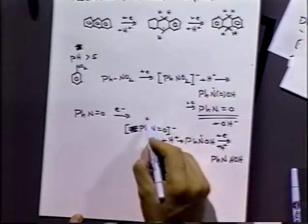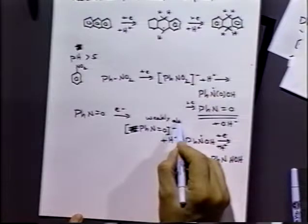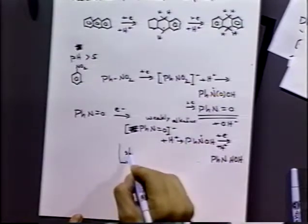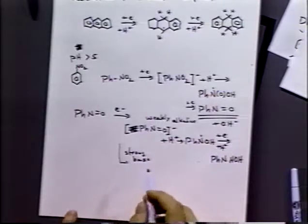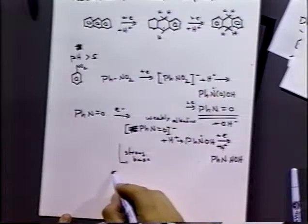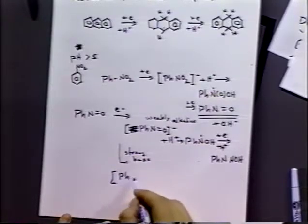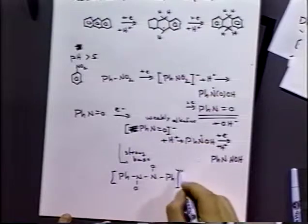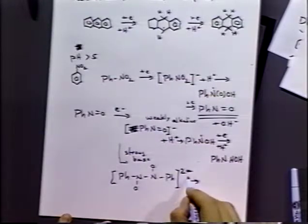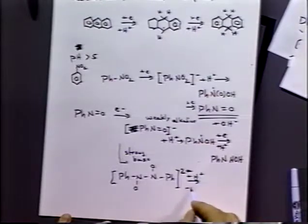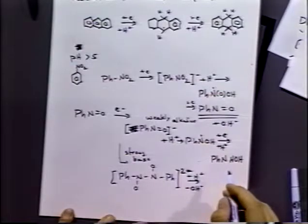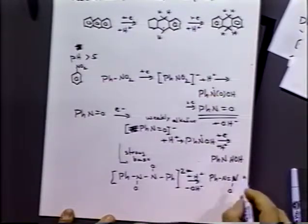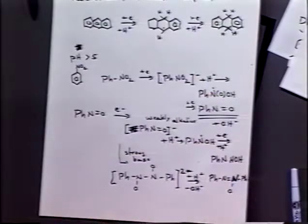So in weakly alkaline solution, we get this basically system. If we increase the alkalinity of the system to a strong base system, we get a different reaction entirely. What happens is now we get a dimerization reaction. And that reacts with the acid or protons as there are in solution. And you'll get the azoxybenzene. So interesting species.